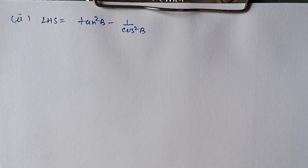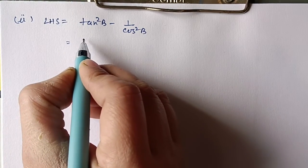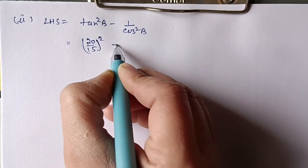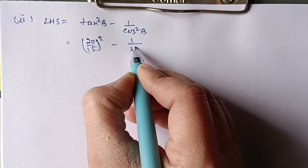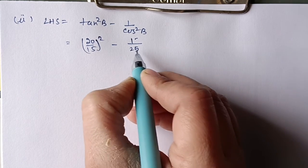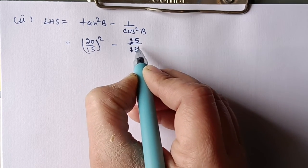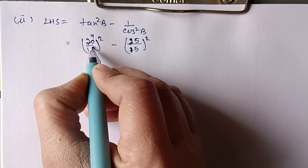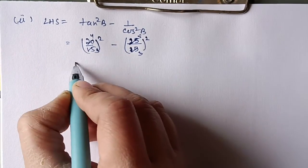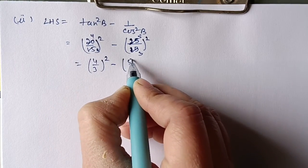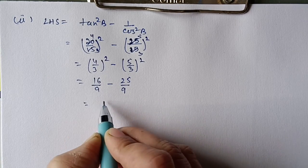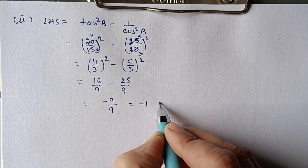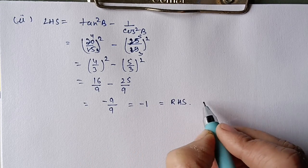For the second part, we prove the left hand side: tan²B minus 1/cos²B. Tan B means perpendicular by base; for angle B, perpendicular is AD which is 20 and base is BD which is 15. Cos B means base by hypotenuse; base is 15 and hypotenuse is AB which is 25. So we have (20/15)² minus (25/15)²: simplifying, (4/3)² minus (5/3)² equals 16/9 minus 25/9 equals minus 9/9 equals minus 1. Right hand side is also minus 1, so hence proved.